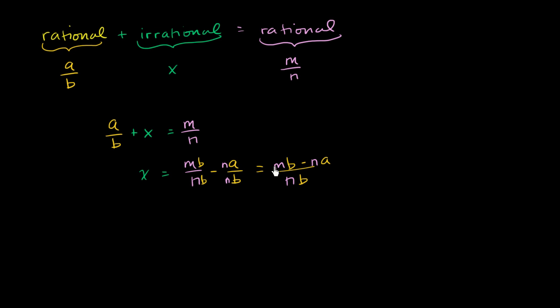This denominator is clearly an integer - the product of two integers. And the numerator, mb is an integer and na is an integer. The difference of two integers means this whole thing is an integer.